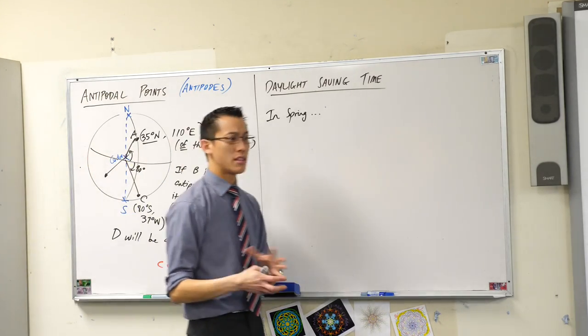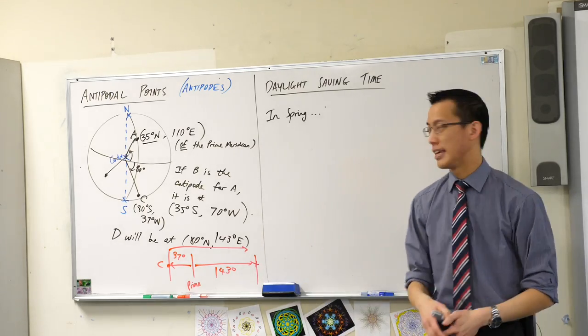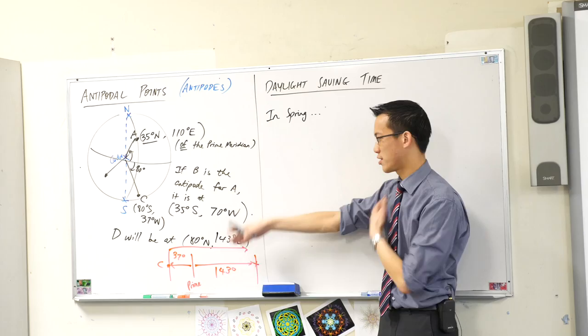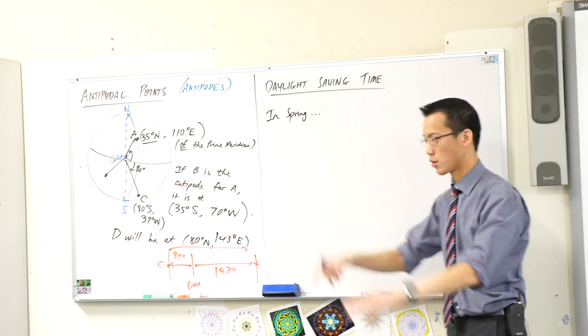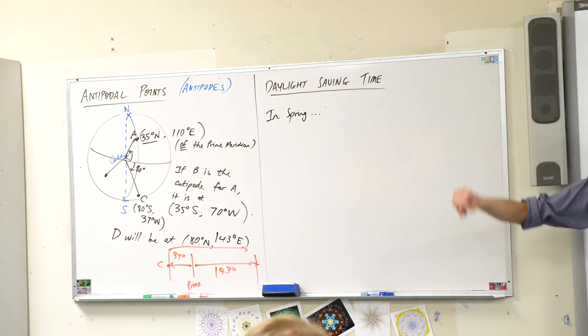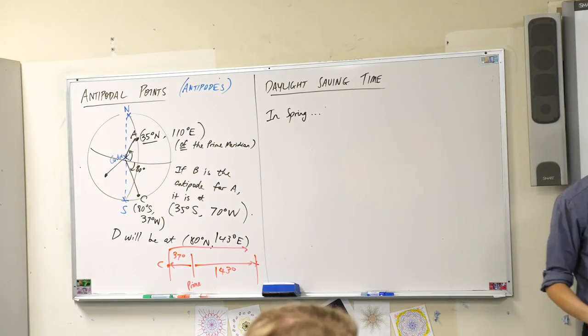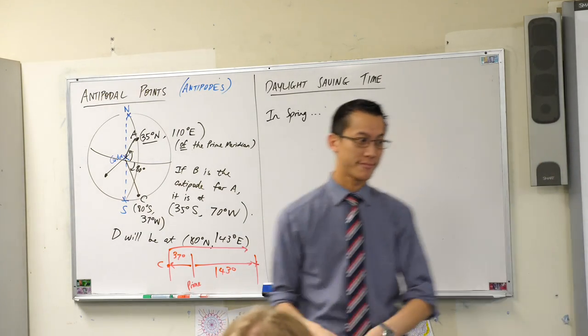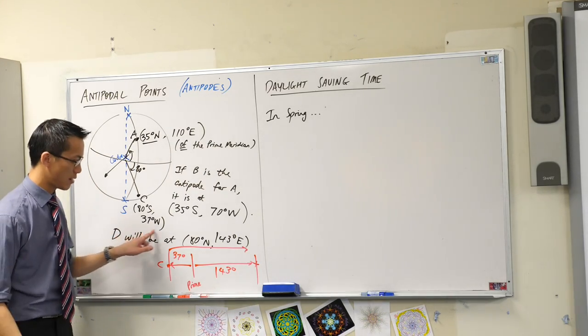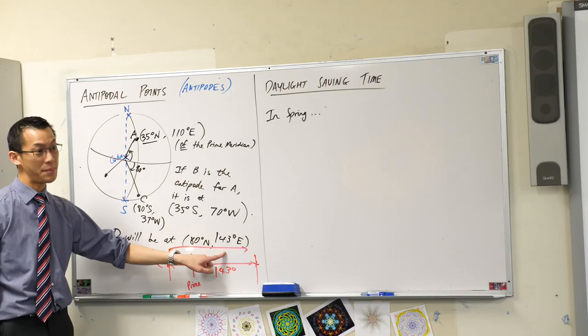So think about longitude and latitude carefully, and always think about a picture. It doesn't have to be a beautiful picture, just enough so that you can work out some coordinates. Any questions about that? I made it up. I just picked a point. Yeah, so if this is where your original point is, this is where your antipode will be.